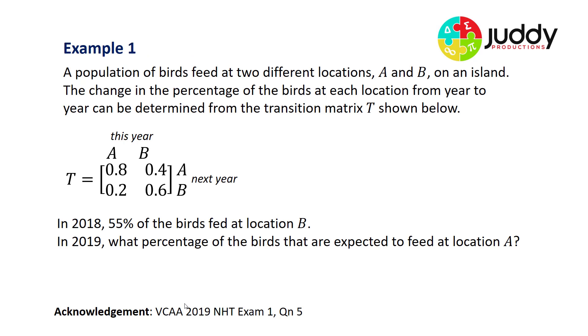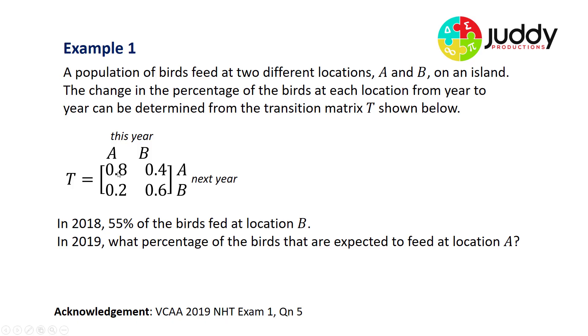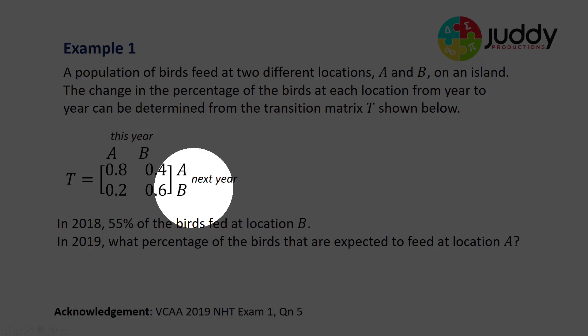Example one: a population of birds feed at two different locations A and B on an island. The change in the percentage of the birds at each location from year to year can be determined from the transition matrix T shown below. The transition matrix shows us that those birds who feed at location A this year, 80% will feed at location A next year, and 20% will transition to location B.